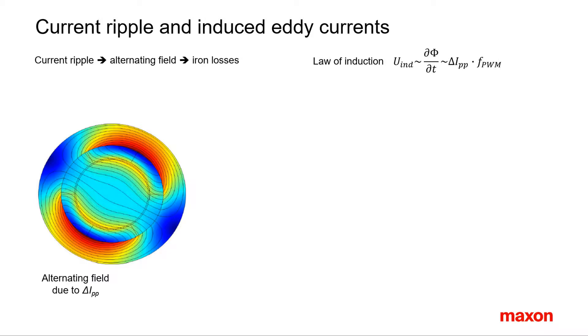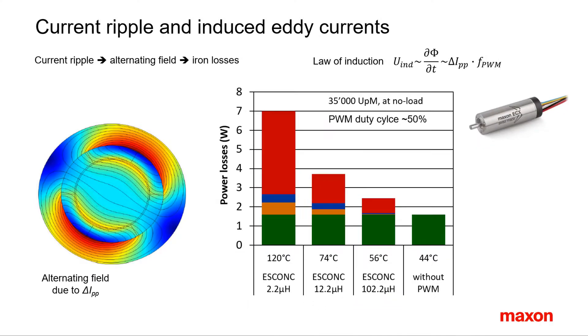The Maxon lab has tried to quantify these effects with measurements and simulations with the following results. From left to right, the additional inductances increase. The motor speed is 35,000 RPM. That's not extremely high for this motor, but the PWM duty cycle is the worst possible. It is 50%. On the right, the diagram is without PWM. Only a moderate temperature increase due to the classic iron losses stemming from the rotating magnet.